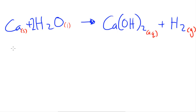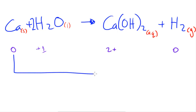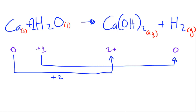Calcium on the reactant side has an oxidation number of zero. Calcium in Ca(OH)₂ has an oxidation number of 2+, because it's bonded with OH⁻ and the overall charge is zero. Hydrogen in H₂O has an oxidation number of +1, whereas hydrogen in H₂ has an oxidation number of zero.